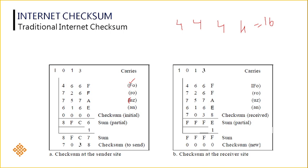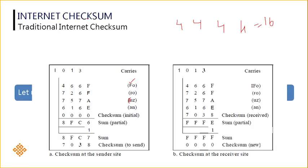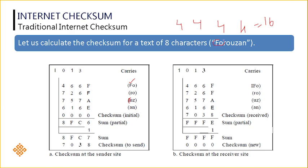F is nothing but 46 and O is nothing but 6F. Similarly, the next two characters, that is R and O: R has ASCII value 72 and O is 6F. And similarly, U and Z: for U the ASCII value is 75 and for Z it is 7A. And for A and N: A is 61 and N is 6E. These are all the ASCII values.